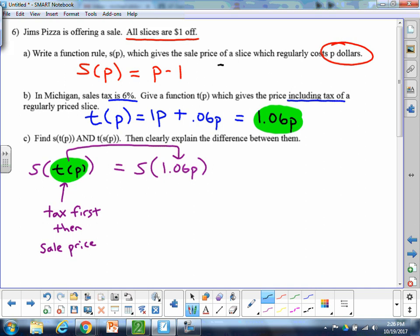And now go back up and look at what the rule S says. S, remember, is the sale price. Or think about S of any price is just going to be whatever the price is, and then you subtract $1, right? That's just what we had written for part A. So back down to part C where we're at now. I need S of 1.06P. So the rule just says it's just 1.06P minus 1, right? There's a sale price, $1 off. So that's S of T of P.